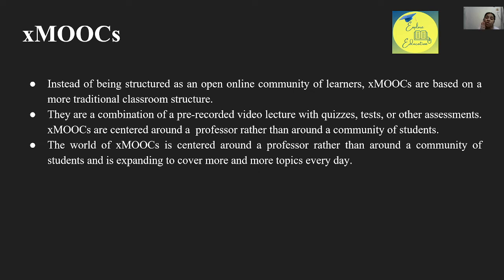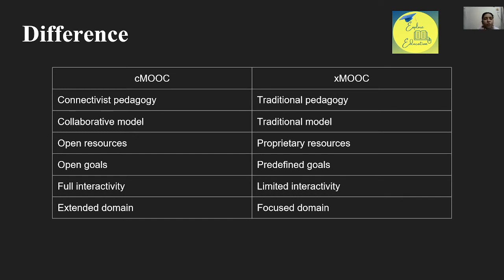So this is a clear-cut difference between C MOOCs and X MOOCs. In C MOOC, there is a collaborative model — meaning peer learning, group learning, networking, and community — whereas X MOOC follows a more traditional model. In C MOOC, there are open resources and creative commons where the learner is self-constructing knowledge. In X MOOC, generally it is the professor's material. In C MOOC, goals are open — not pre-determined — you can set your own goals. In X MOOC, goals are pre-determined.